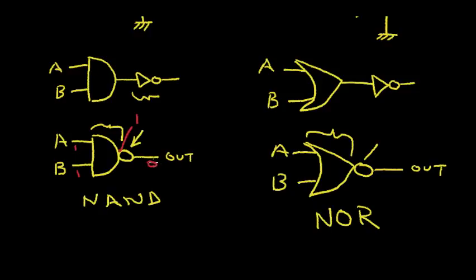It requires both the A input and the B input being at a logic 1 to make the output a 0. Any other condition will cause the output to go to a 1. In the NOR gate, if we have a 0 at this input and a 0 at this input, we have a 0 at the output of the OR part, or a 1 at the output of the NOR. And if either the A input or the B input goes to a 1, the output will go to a 0.